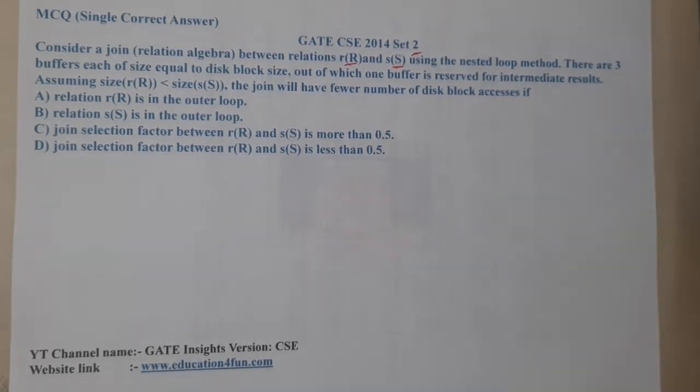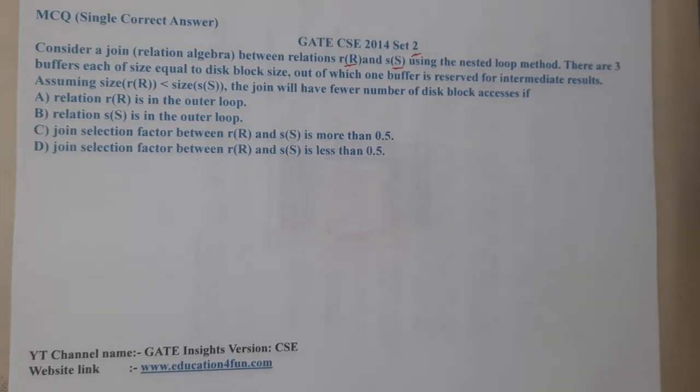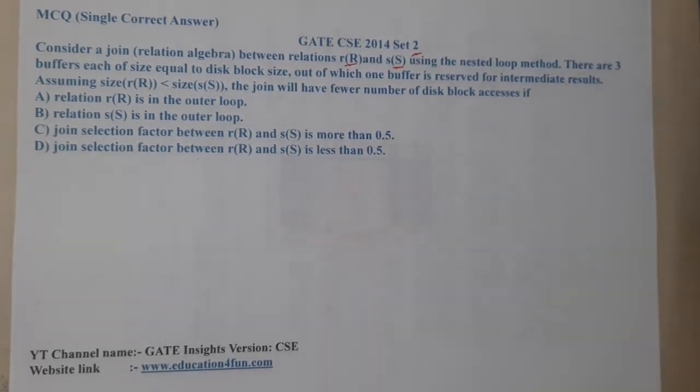Then the join will have fewer number of disk blocks if: Option A says that relation R is in the outer loop. Option B says that S is in the outer loop. Option C says that join selection factor between R and S is more than 0.5, and Option D says that join selection factor between them is less than 0.5.